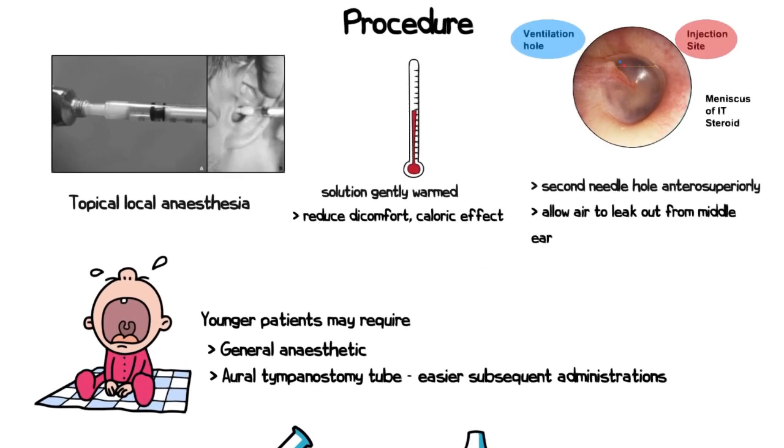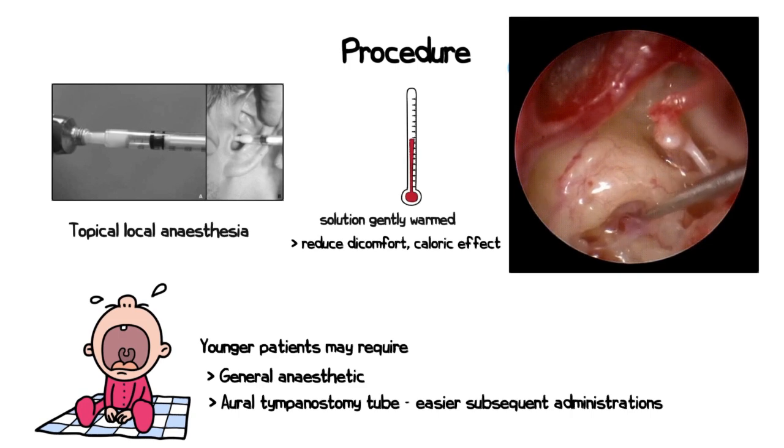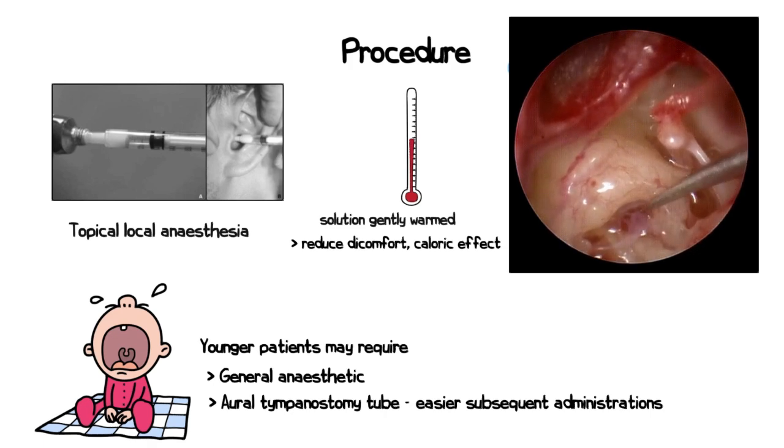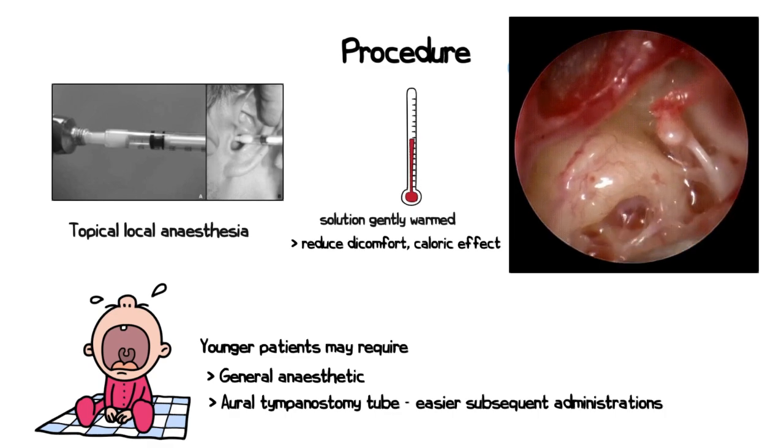Irrespective of how steroids are administered intratympanically, in approximately 30% of cases, the round window niche may be obstructed by mucosal web or adhesion. As such, regardless of how the steroid is administered, they may not effectively reach the inner ear.